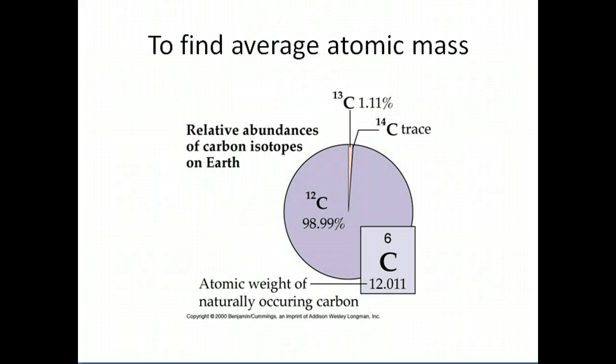This picture shows the relative abundances of different isotopes, as discussed in Chapter 2. Because carbon-12 is the most abundant, the average atomic mass of carbon is very close to the mass of that particular isotope. There is a very small amount of carbon-13 and an even smaller trace amount of carbon-14.